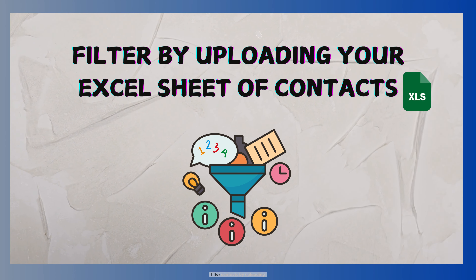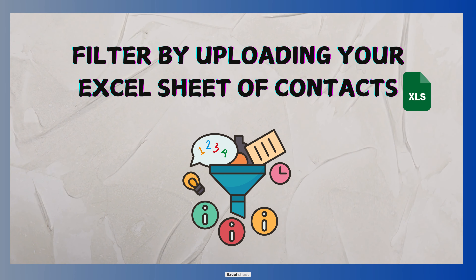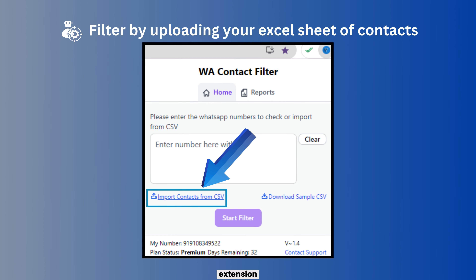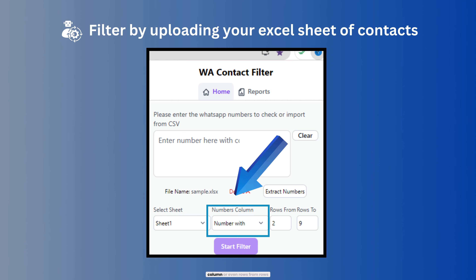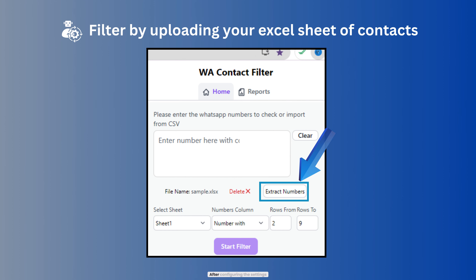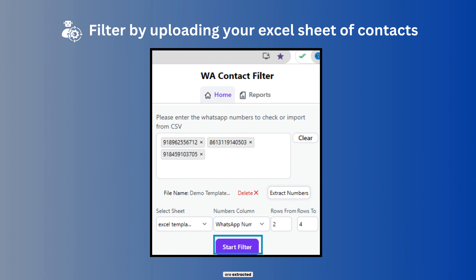Another method is to filter contacts by uploading an Excel sheet into the extension. In the extension pop-up, click on Import Contacts from CSV to upload your Excel sheet. Once uploaded, you can also select the sheet, numbers column, or rows starting from row 2. After configuring the settings, click on the Extract Numbers button to begin the extraction process, and once the numbers are extracted, click Start Filter and let the process complete.